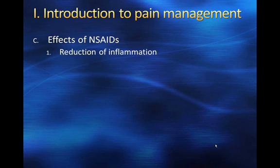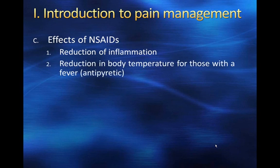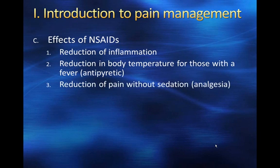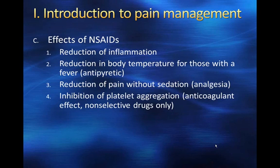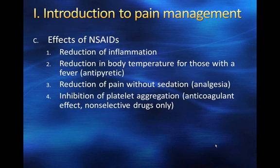NSAIDs are primarily used to reduce inflammation. They are important for reducing body temperature — what's called an antipyretic effect for fever. They provide reduction of pain without sedation, meaning you get analgesia without being sleepy. However, we also get inhibition of platelet aggregation, which is an anticoagulant effect seen in the non-selective COX inhibitors. This is seen as both a positive and a negative side effect. In fact, aspirin is used primarily for its anticoagulant properties and less as a pain reliever in modern times.